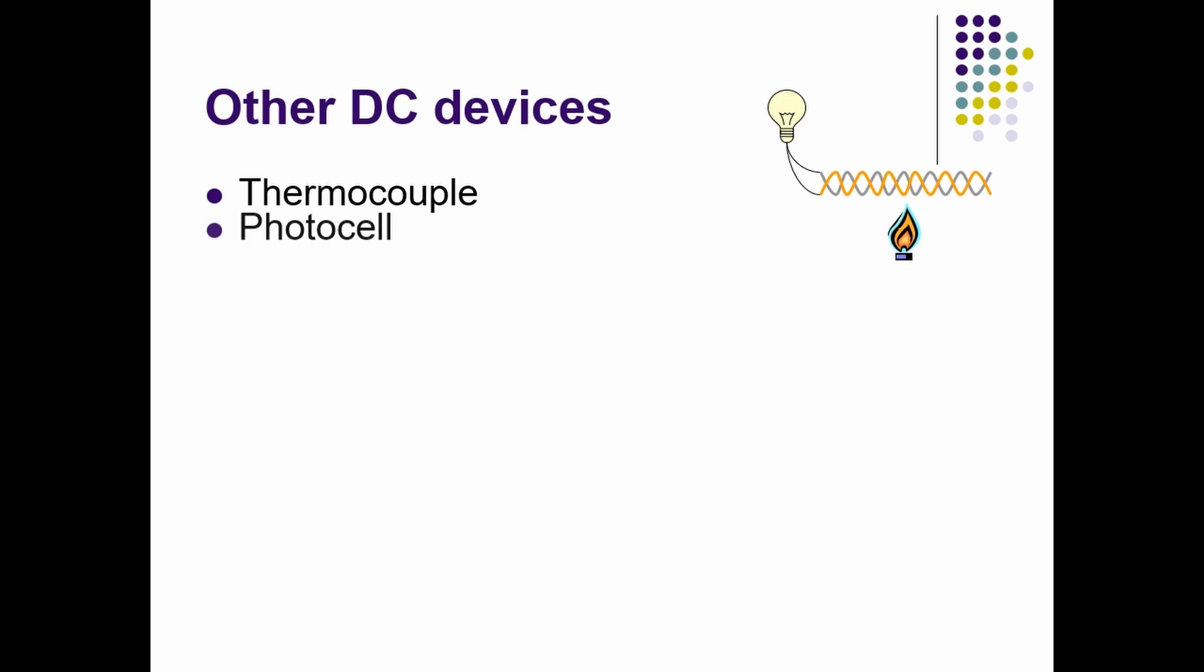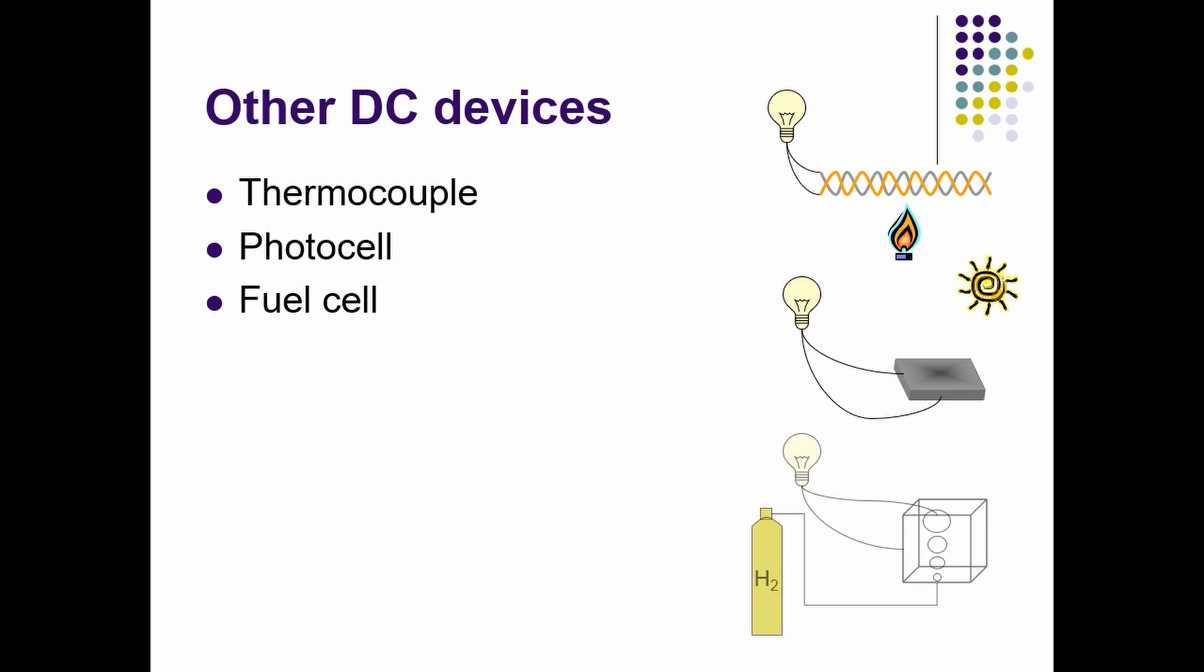A photocell takes light and converts it to electricity. Photocells are becoming more efficient and are becoming more popular for residential electrical generation. Fuel cells take a gas like hydrogen and bubble it through an electrolyte solution. The hydrogen is split into protons with positive charge and electrons with a negative charge. The charged particles are collected on the anode and cathode, and this is electricity. Fuel cells are attractive because they produce water as a waste product and will operate as long as the hydrogen fuel is present to power the cell.